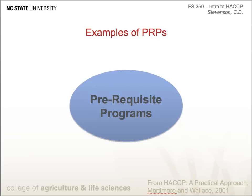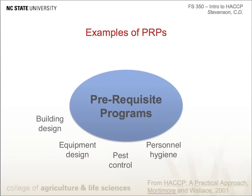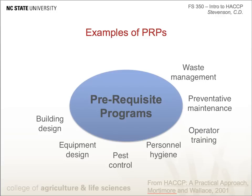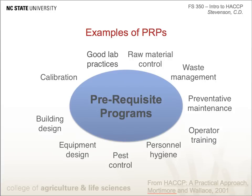Some examples of prerequisite programs include: building and equipment design, pest control, personal hygiene, operator training, preventative maintenance, waste management, supplier assurance of raw material control, good laboratory practices, calibration of instruments in a lab, and good manufacturing practices.